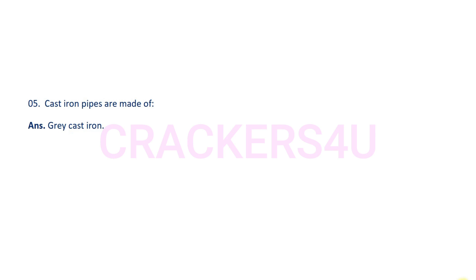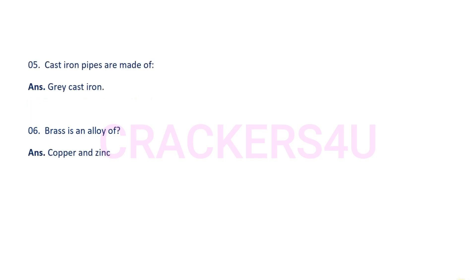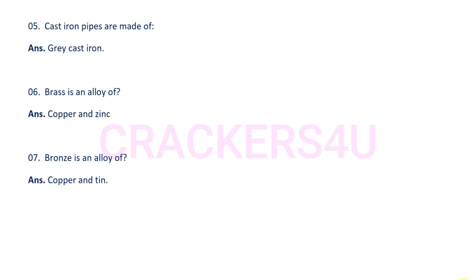Question 5: Cast iron pipes are made of. Answer: Gray cast iron. Question 6: Brass is an alloy of. Answer: Copper and zinc. Question 7: Bronze is an alloy of. Answer: Copper and zinc.